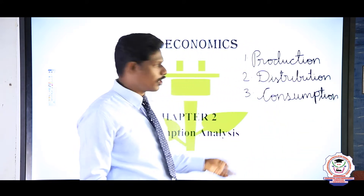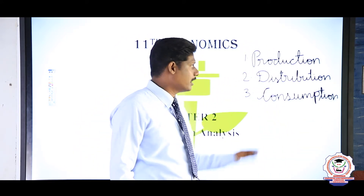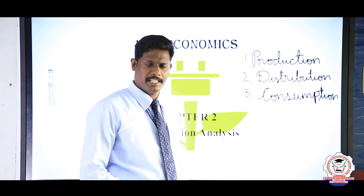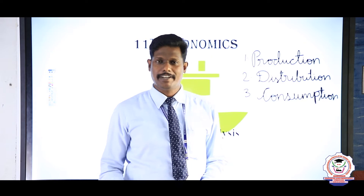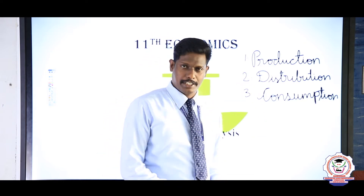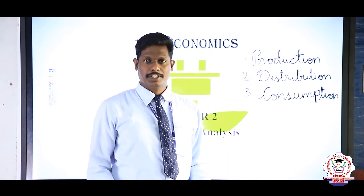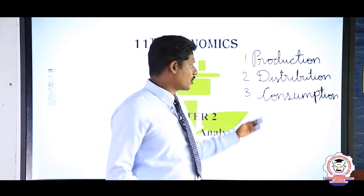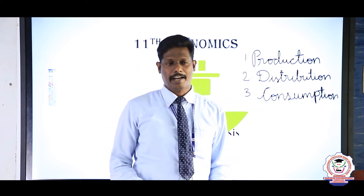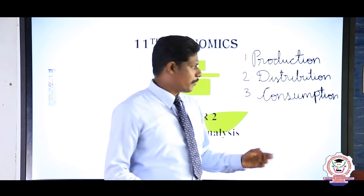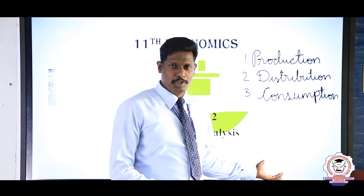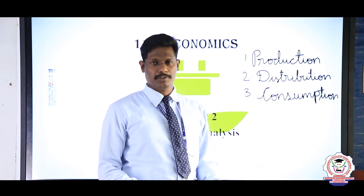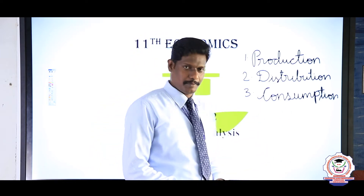Generally in economics, these are the three important things: production, distribution, and consumption. Converting raw material into finished goods is called production. The finished goods are then supplied to the consumption market — that is called distribution. After distribution to the marketplace, consumers buying and using the goods is called consumption.